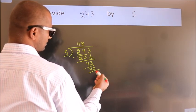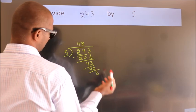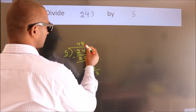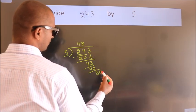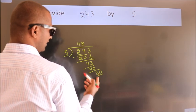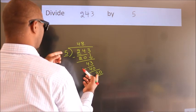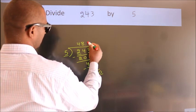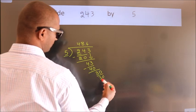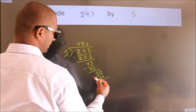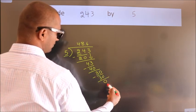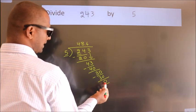After this, no more numbers to bring down. So what we do is we put a dot and take 0. So 30. When do we get 30 in the 5 table? 5 times 6 is 30. Now we subtract, we get 0. We got remainder 0.